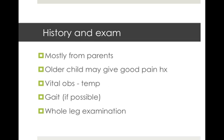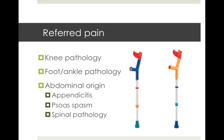Your history and exam for hip pain in children may mostly come from parents if the child is too young, but the older child might be able to give a good pain history. You'd want to know their vital obs including temperature. If able to walk, gait may tell you about the pathology, and the examination should include the whole leg from hip to knee, foot, and ankle — referred pain is a factor, and unfortunately kids are poor at localising their pain. Abdominal causes can also be involved.